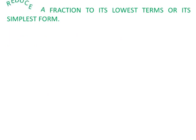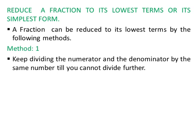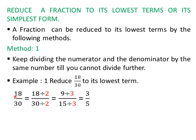Now let us see how to reduce a fraction to its lowest terms or simplest form. Method 1: Keep dividing the numerator and the denominator by the same number until you cannot divide further. Example 1: Let us reduce 18 by 30 to its lowest term. First, find a common factor that divides both 18 and 30. As both are even numbers, both are divisible by 2, so we divide both numerator and denominator by 2.